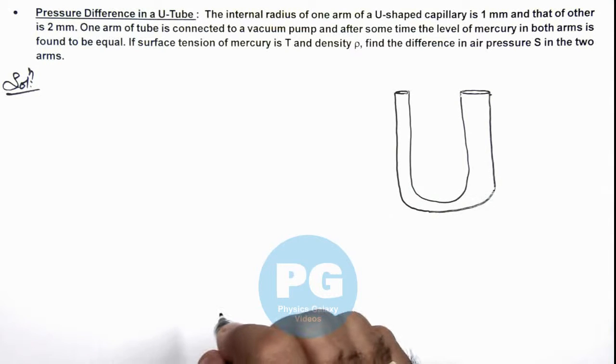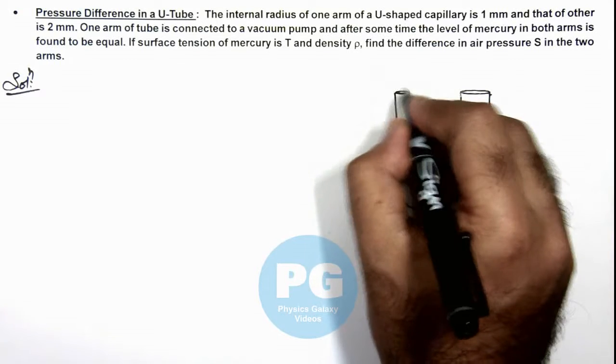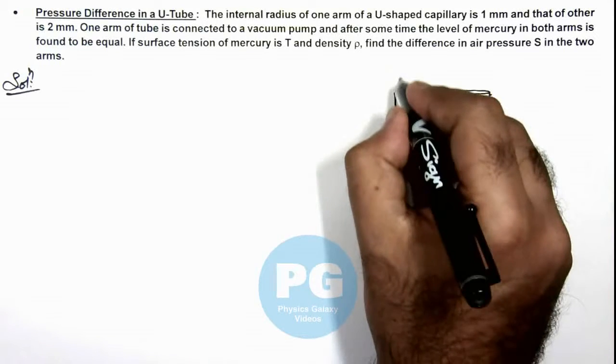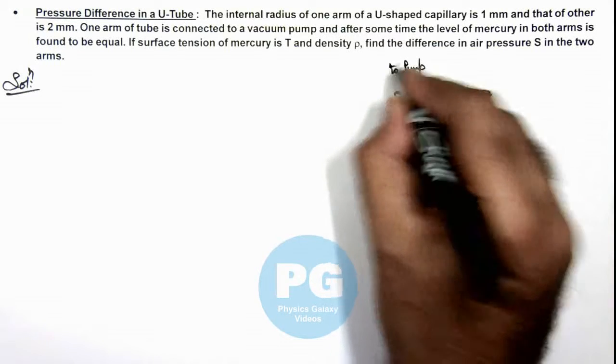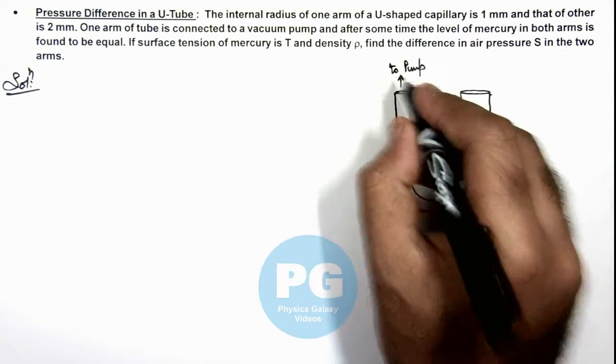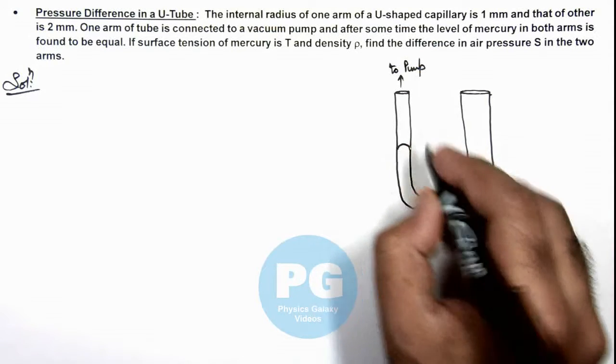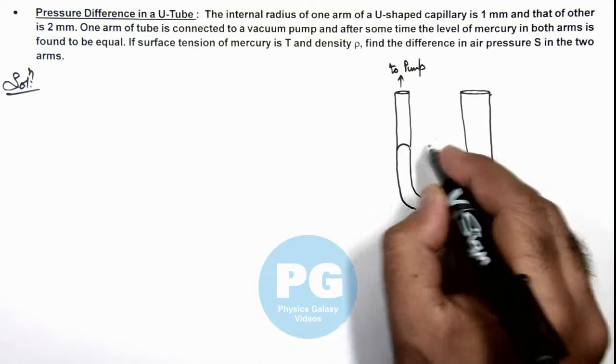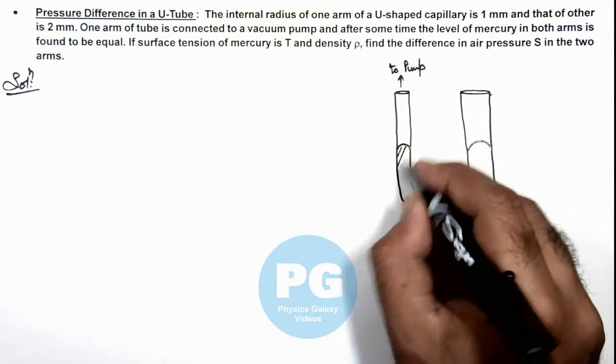Now in this situation, if this arm of smaller cross-section area is connected to a vacuum pump, it will pull out all the air inside. In this situation, as no atmosphere is there, mercury will be at a level, and on the other side also we are given that mercury is at the same level.